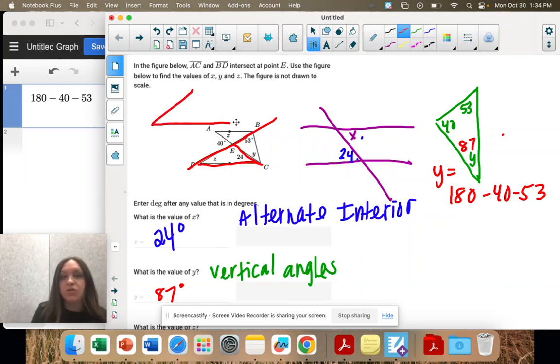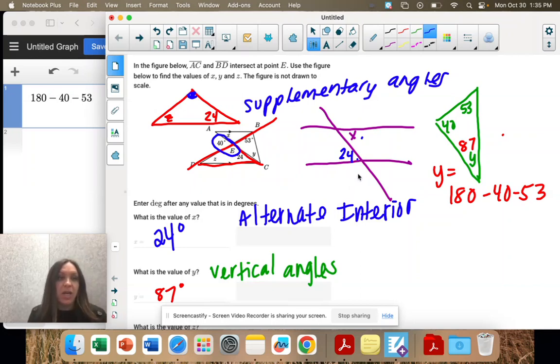And we know triangles add to 180, so let's use that. This is 24. This is what we're trying to find. We can find this angle using what we call supplementary angles. Remember, those are two angles that add to 180 degrees. So right here, 40 and E add to 180. They're two angles cut on a straight line. So if this is 40, we would take 180 minus 40, and this would be 140.